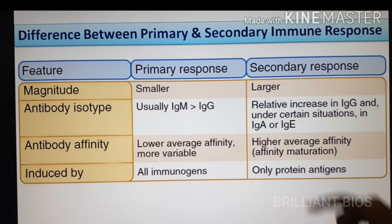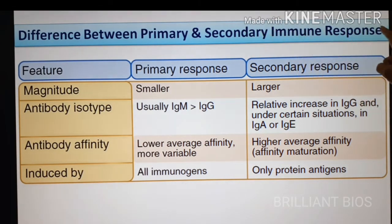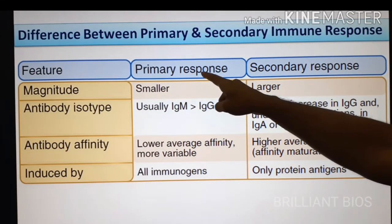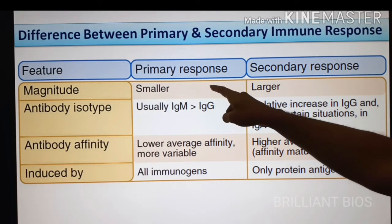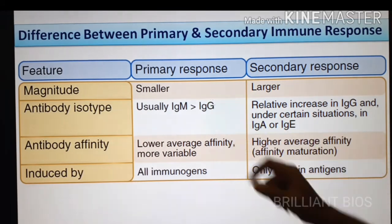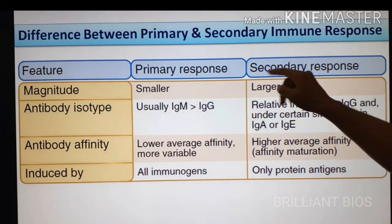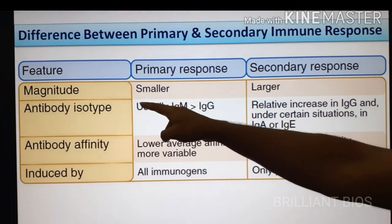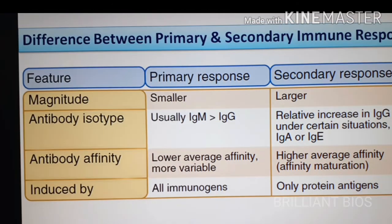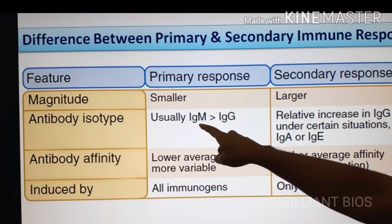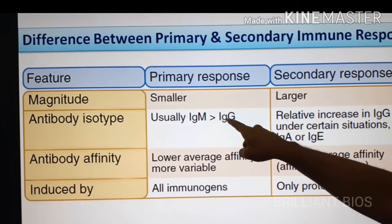Now here are the differences between primary and secondary immune response. The first feature is magnitude: in primary immune response the magnitude is smaller — the peak is smaller — whereas in secondary response the magnitude is larger. Regarding antibody isotype — what type of antibody plays the role — in primary immune response, IgM molecules play a major role over IgG.